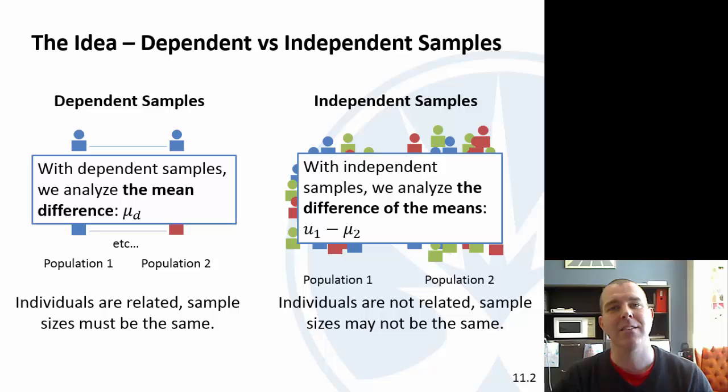Of course, on the test, that's going to be the issue: distinguishing which one do I have? One red flag, it's not perfect, but if your sample sizes are not the same, it has to be independent samples. Now, you could have the same sample size, but the two samples are independent. But if they are different, then it can't be dependent samples.